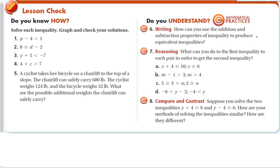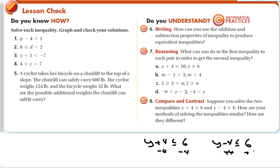How can you use the addition and subtraction properties of inequality to produce equivalent inequalities? Do the same thing to both sides — same as equations. Add the same thing to both sides or subtract the same thing from both sides. What can you do to the first inequality in each pair to get the second? Subtract 4, add 1, subtract 3, and add 2 to both sides. For y plus 4 ≤ 6 versus y minus 4 ≤ 6, the method is the same — we do the same thing to both sides — but here we subtract 4 and there we add 4.